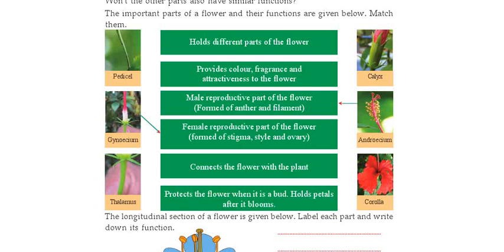Now, which is the first part we have studied? The first part is the pedicel. See here — this is the pedicel. It is the thick part that starts from below. What is the function of pedicel? The pedicel connects the flower with the plant.